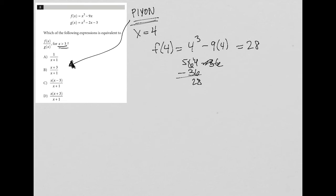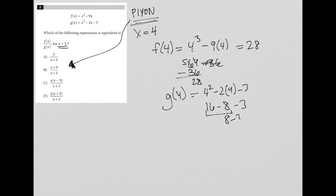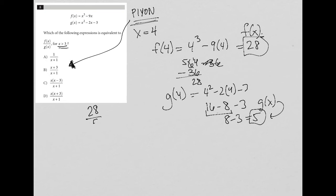I'll do the same for g(4): 4² - 2(4) - 3 = 16 - 8 - 3. 16 - 8 is 8, and 8 - 3 equals 5. So f(x) = 28 and g(x) = 5 when x = 4. Therefore, f(x) over g(x) equals 28 over 5 when x equals 4.